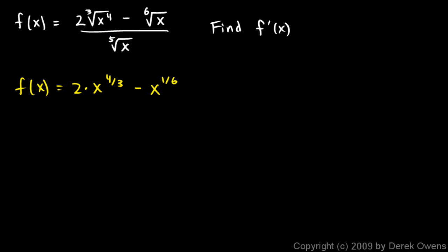And then instead of dividing by the 5th root of x, I'm going to multiply the whole thing by the reciprocal of that. And that 5th root of x down here is x to the 1 fifth. So instead of dividing by x to the 1 fifth, I'll multiply by x to the negative 1 fifth. So this is my new function.